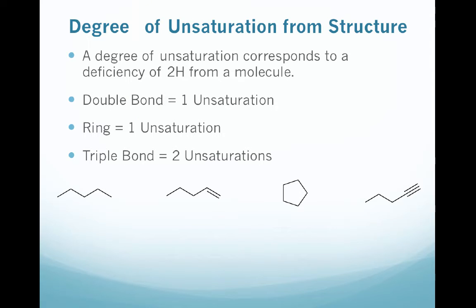A general overview of unsaturations: a degree of unsaturation is essentially a deficiency of 2 hydrogens from a molecule. So every time you have a loss of 2 hydrogens, that's an additional degree of unsaturation.